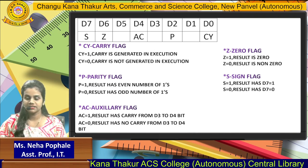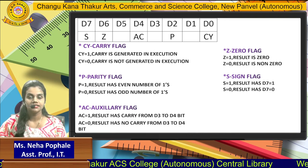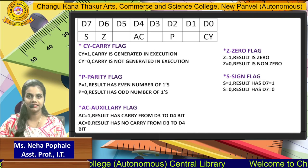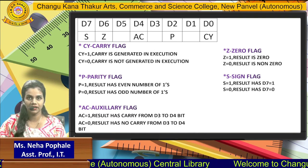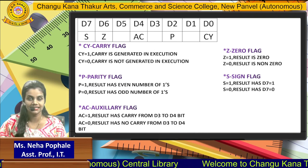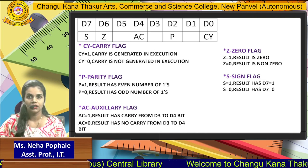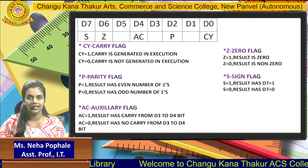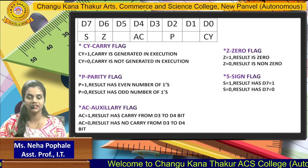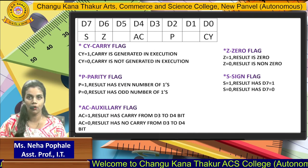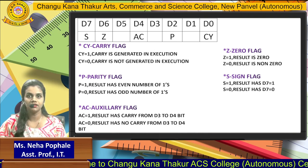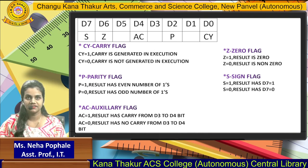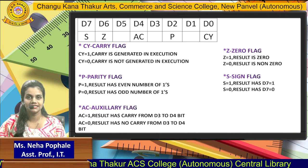The next flag is the zero flag. The zero flag is set to 1 when the result of the operation you perform is zero. That time the zero flag is set to 1; else it is set to 0. If you are getting a non-zero result, the zero flag is set to 0.